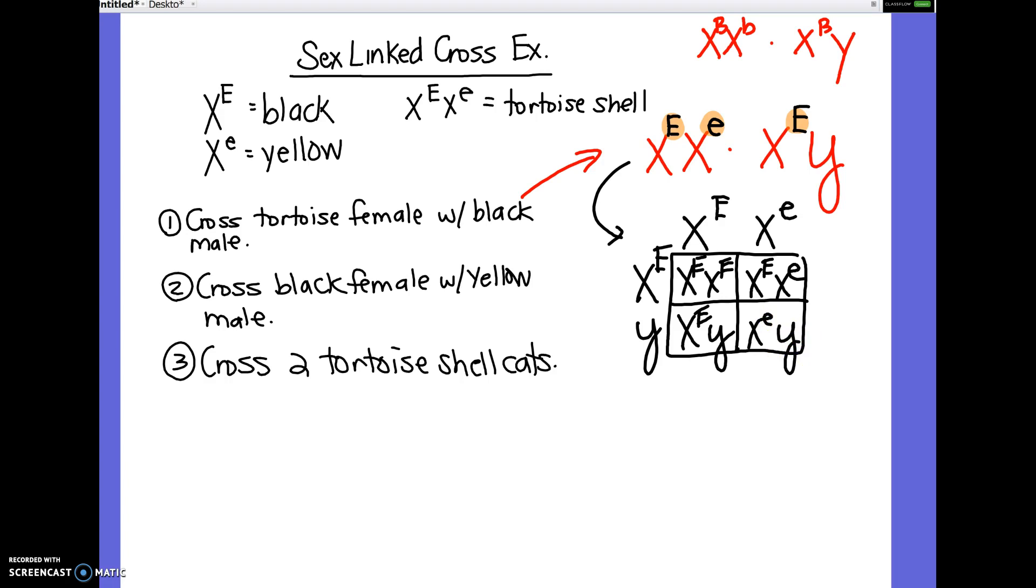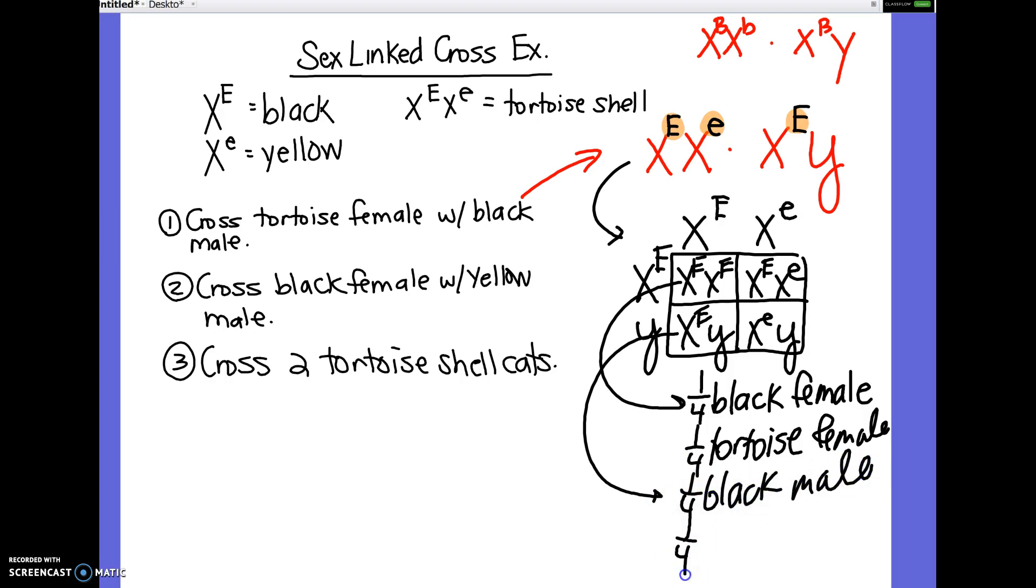It's important in these that we pay attention to the sex of the offspring. So this offspring here is female. What color is she? So you could write it this way. You have one-fourth black female. How about the other female? So we have one-fourth tortoiseshell female. Our first male, he's what color? One-fourth black male. And our last one is yellow, right? So one-fourth yellow male.